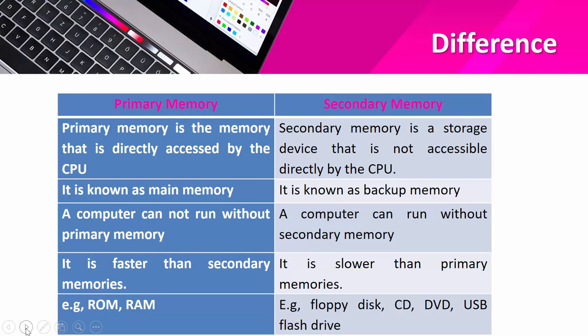A computer cannot run without primary memory. However, a computer can run without secondary memory — for example, we can start an OS from a pen drive. So we can run a computer without secondary memory, but not without primary memory. Primary memory is faster than secondary memory because the CPU directly accesses it. Secondary memory is slower because the CPU cannot directly access it — data must first move from secondary memory to primary memory before the CPU can access it.